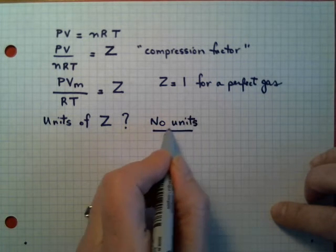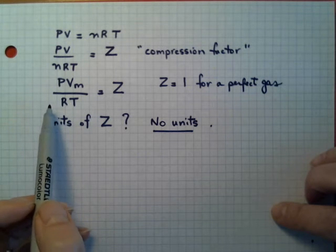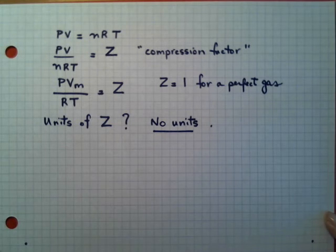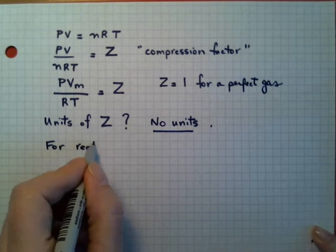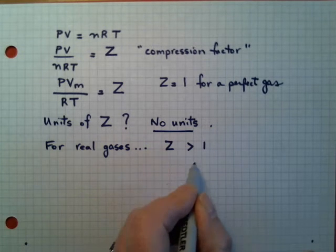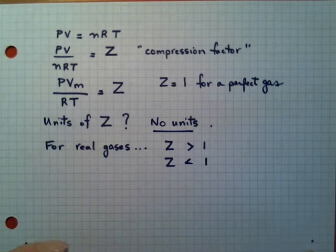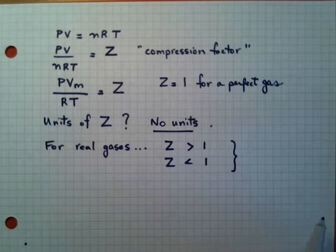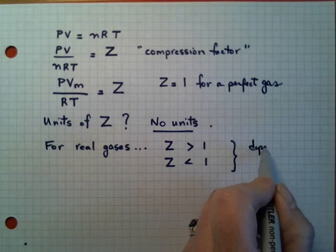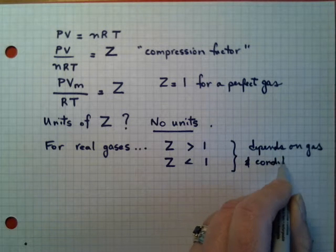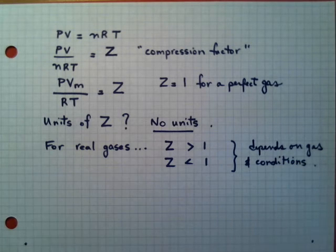So that means if we were calculating Z from pressure, volume, and temperature information, we want to make sure that all the units cancel. For real gases, Z is close to one, but it can be a little bit greater or a little bit less. Z can be greater than one, less than one, and in some rare cases for a real gas, Z is actually very close or equal to one. This depends on the gas itself and to some extent, it depends on the conditions, especially pressure.